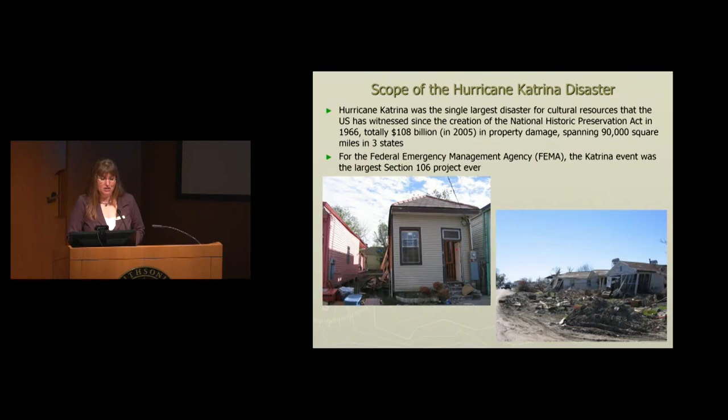When there is a disaster, there will be problems in terms of pulling all of that information together. Most states, tribes, and federal agencies keep those inventories in different capacities — they all start in paper. We've been collecting this information since 1966 when the National Historic Preservation Act was put together, so getting that information out of paper and into a digital world can be troubling. When Hurricane Katrina hit the Gulf Coast and barreled right into Louisiana and Mississippi, it was the single largest disaster for cultural resources that the U.S. has seen since the creation of the National Historic Preservation Act in 1966.